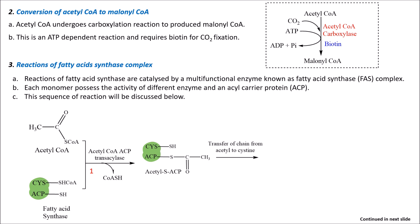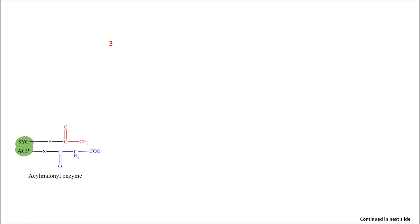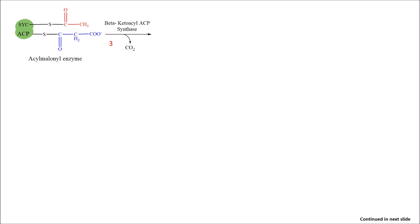In the second reaction, there is a transfer of the chain from acetyl to cysteine, forming acetyl-S-enzyme. This acetyl-S-enzyme then combines with malonyl coenzyme A; in the presence of malonyl coenzyme A–ACP transacylase, CoA is released, giving acetyl-malonyl enzyme. In the third step, in the presence of beta-keto acyl-ACP synthase, there is elimination of carbon dioxide and beta-keto acyl-ACP is formed.